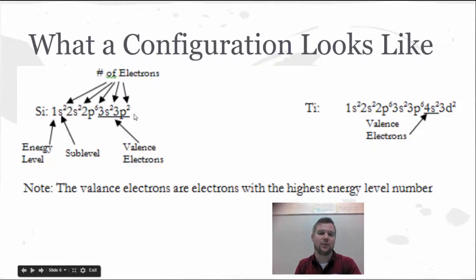And then the superscripts are the number of electrons in each of those. So if I count this up, there's 2 plus 2, which makes 4, plus 6 more makes 10, plus 2 and 2 more makes 14. So there's 14 electrons in silicon, and that makes sense because silicon's atomic number is 14. We can do the same thing for titanium.